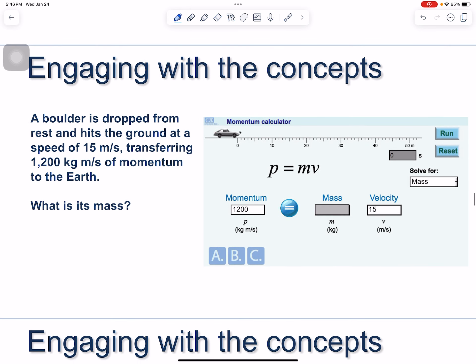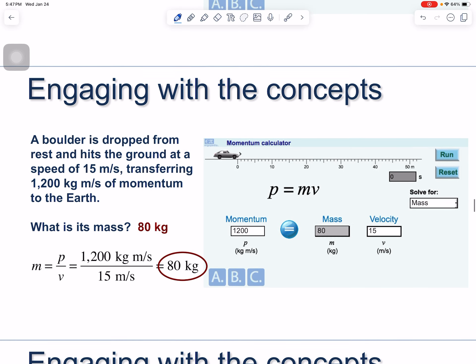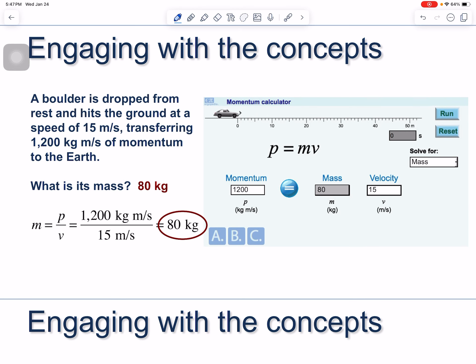A boulder is dropped from rest and hits the ground at 15 meters per second, transferring 1,200 kilogram meters per second of momentum to the earth. What is its mass? Rearranging p = mv to m = p/v: 1,200 kg·m/s ÷ 15 m/s = 80 kilograms.